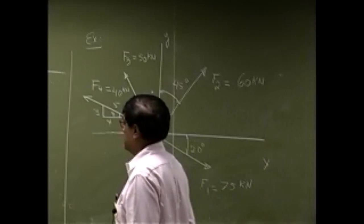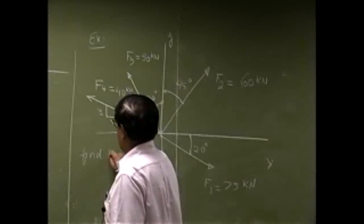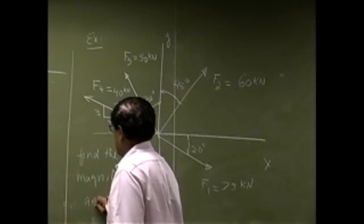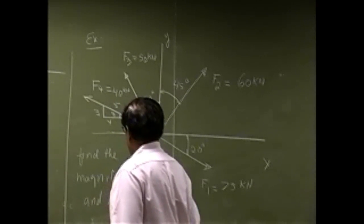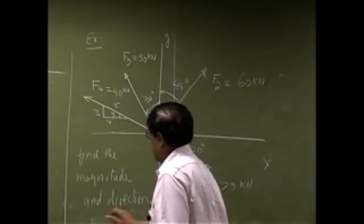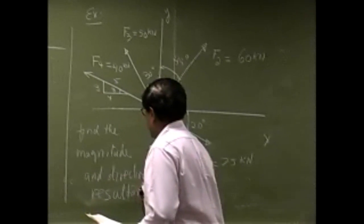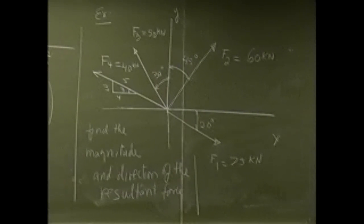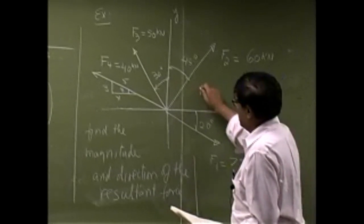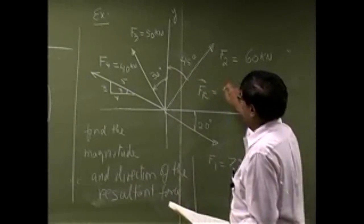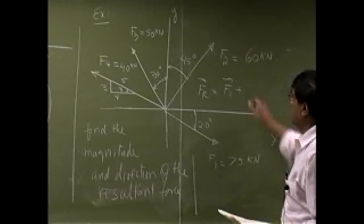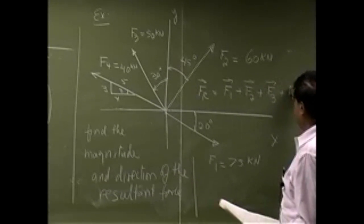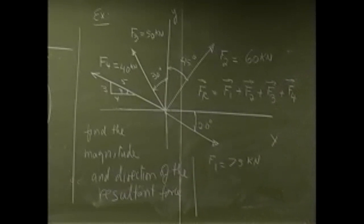The question is to find the magnitude and direction of the resultant force. In this particular case, there are four different forces. That means your resultant force is going to be F1 — the first force vector — then you're going to have the second force vector, then you have the third force vector, and then you have the fourth force vector.